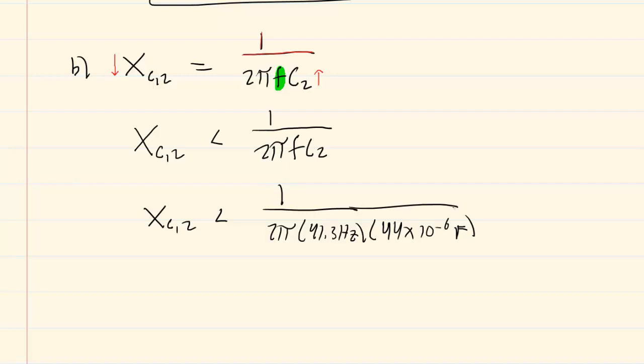And when we do so, we are going to see that x sub c of capacitor 2, the one in part B, will be less than about 87.6. And the unit here will be in ohms. So this would be the correct answer for part B.